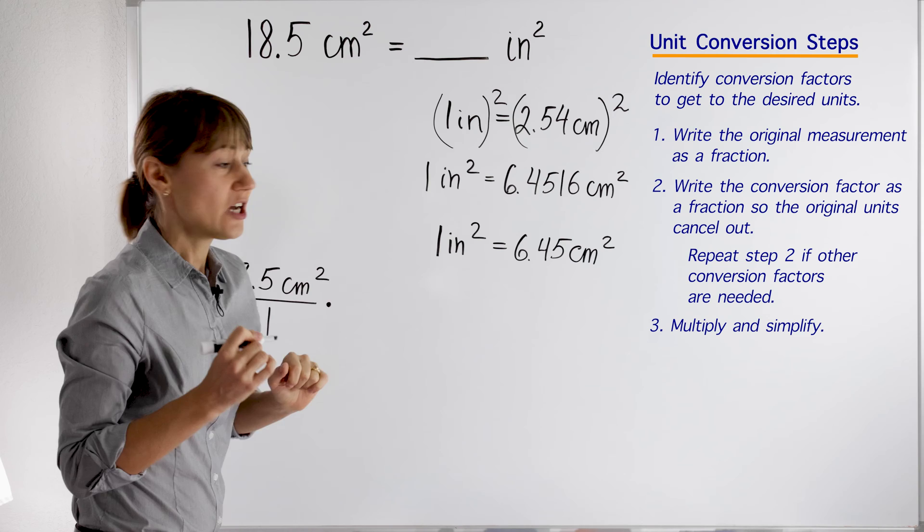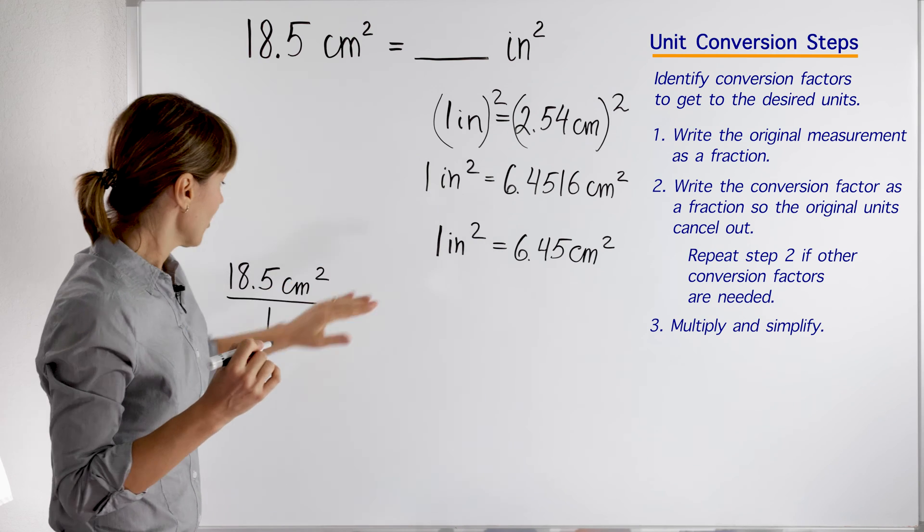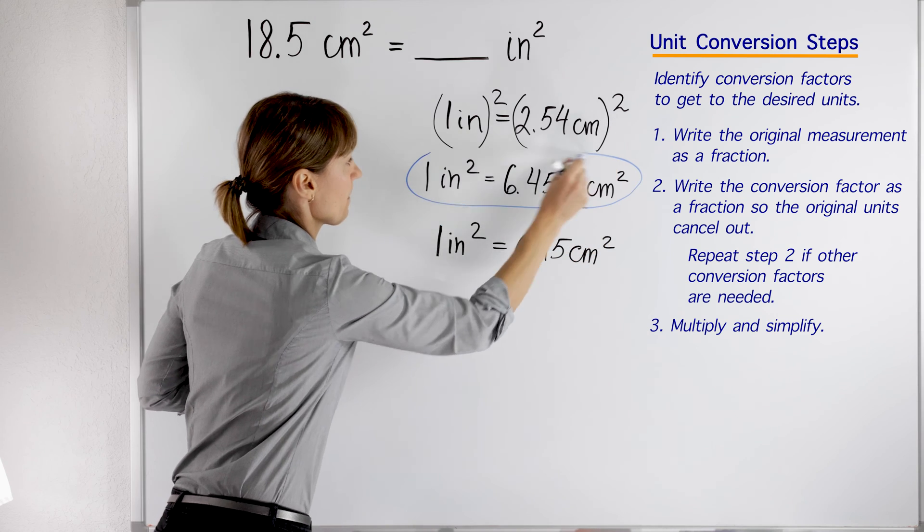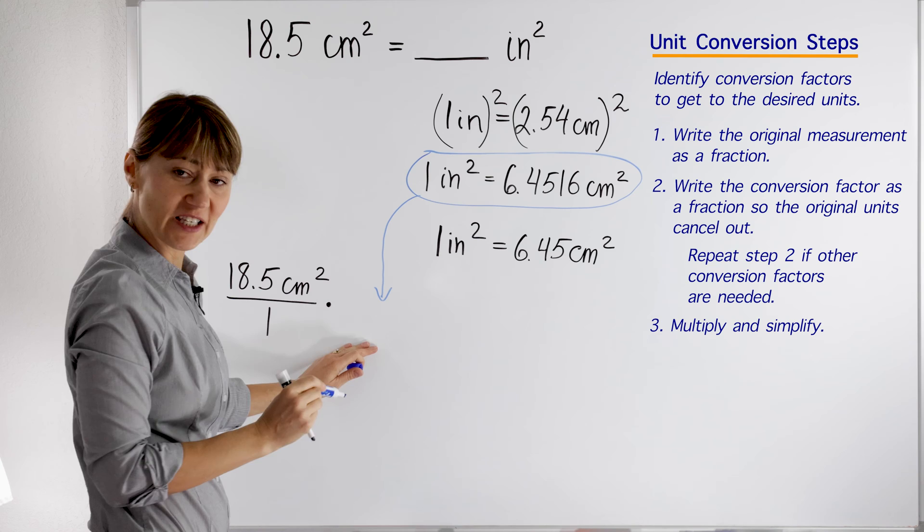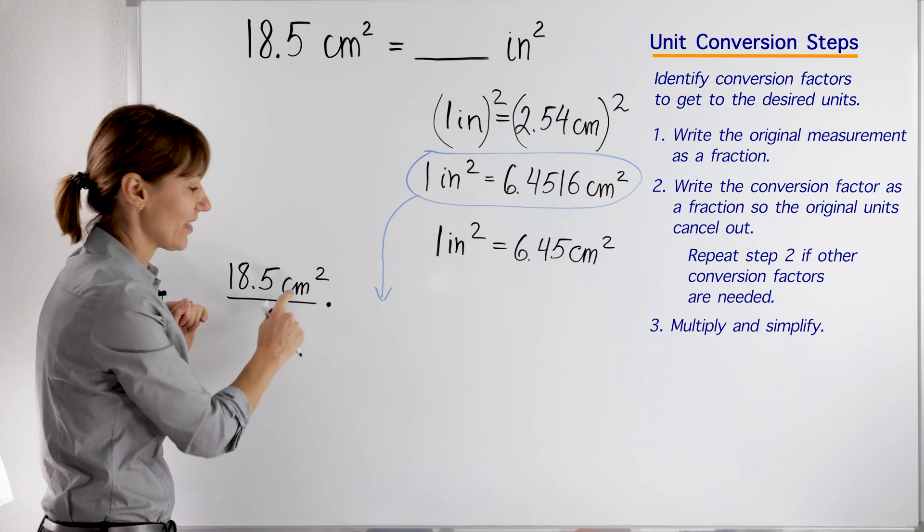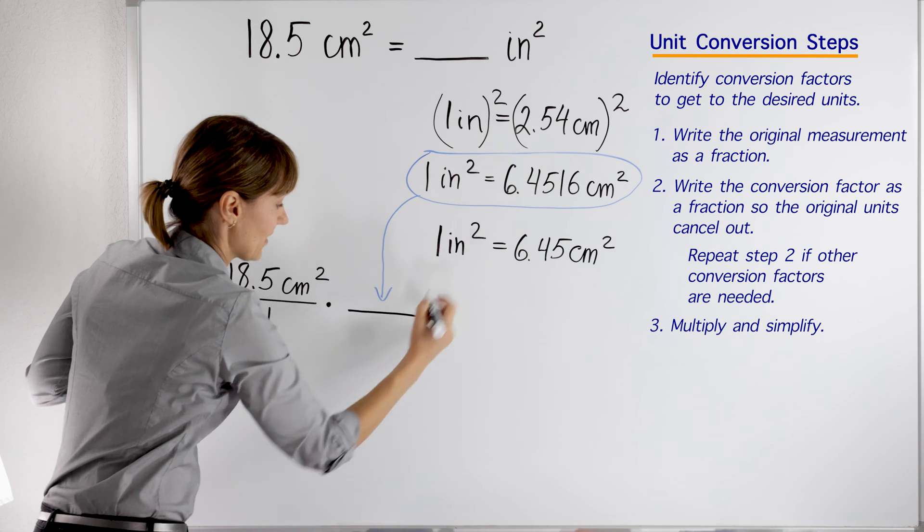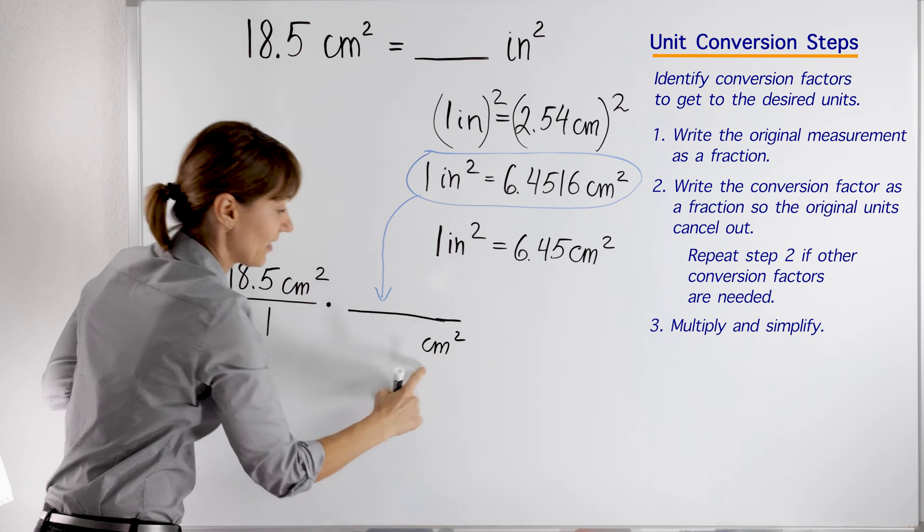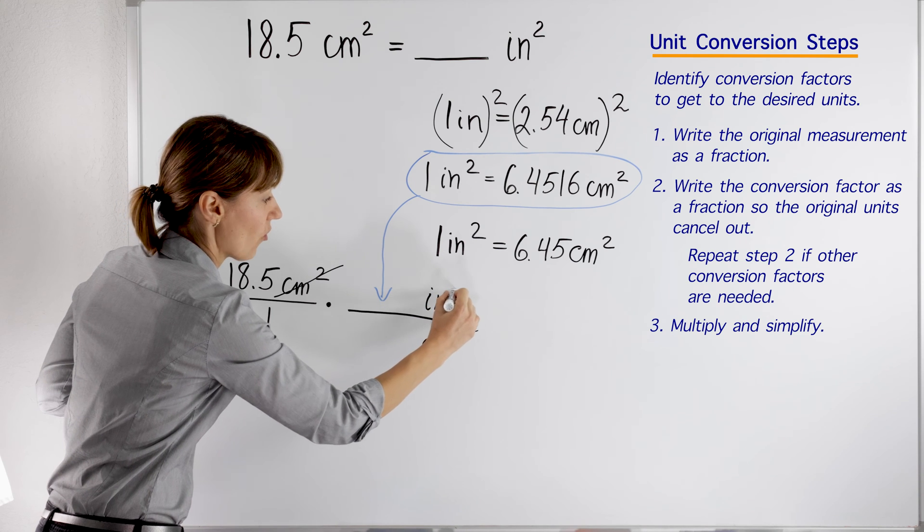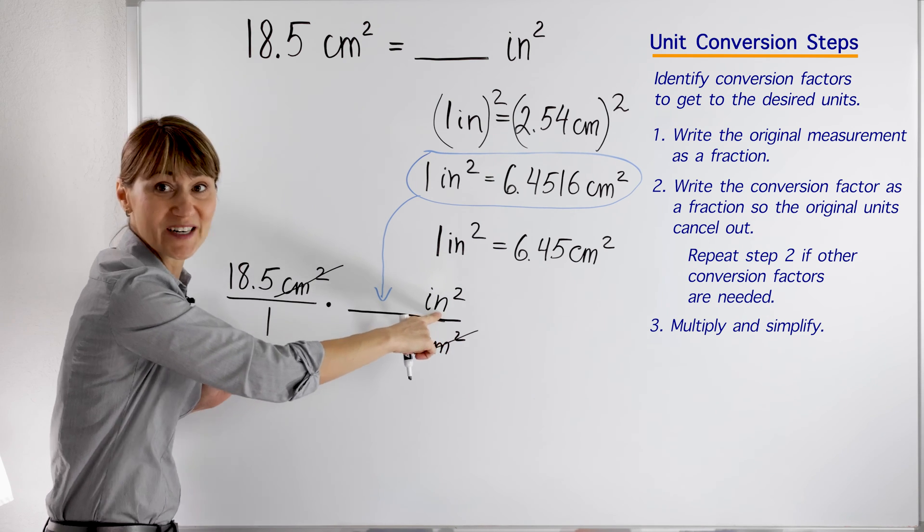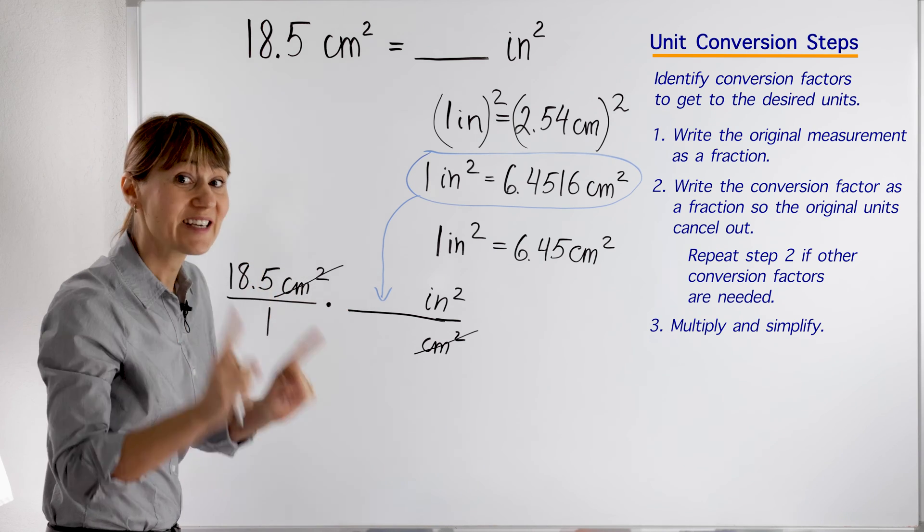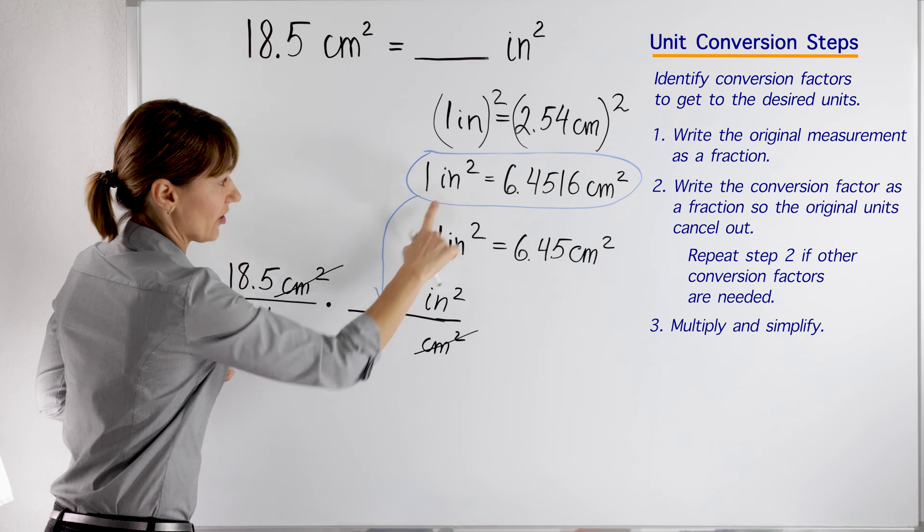The second step tells us to write a conversion factor in such a way that our original units cancel out. I'm going to take our conversion factor and plug it in right here so my original units cancel out. My original units are on top in the numerator, right? So I will write centimeters squared in the denominator. My original units cancel out and I'm left with inches squared, so I will write inches squared in the numerator on top.